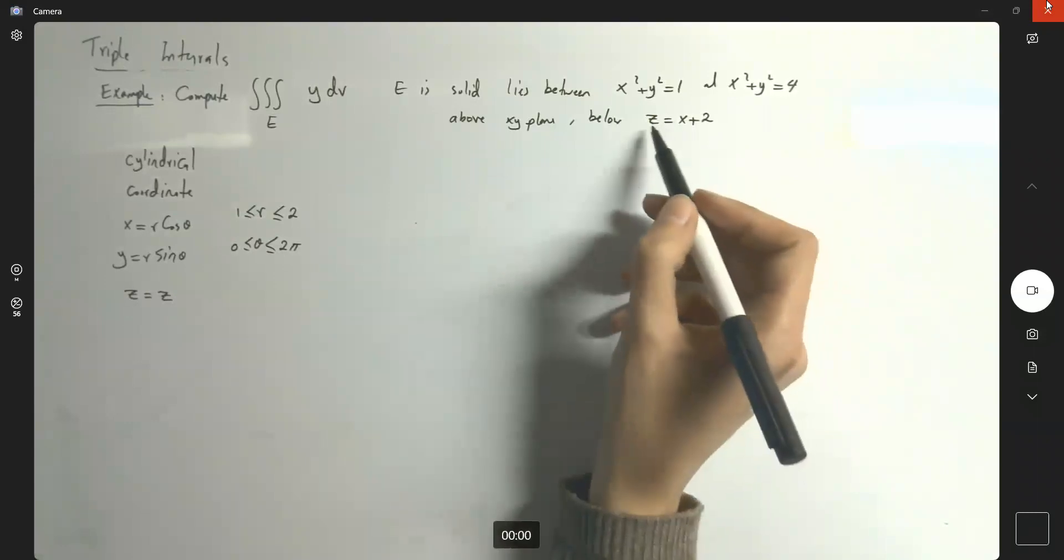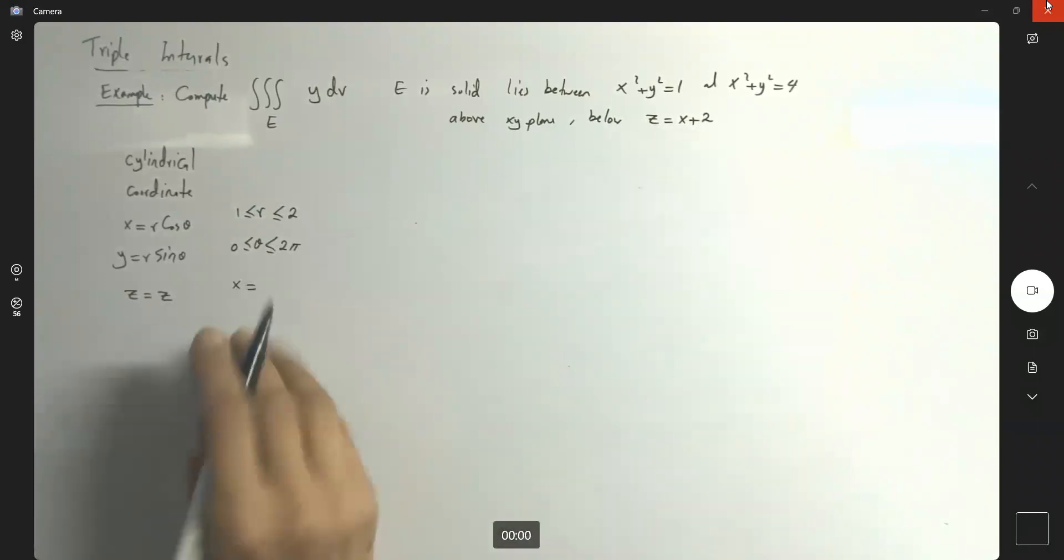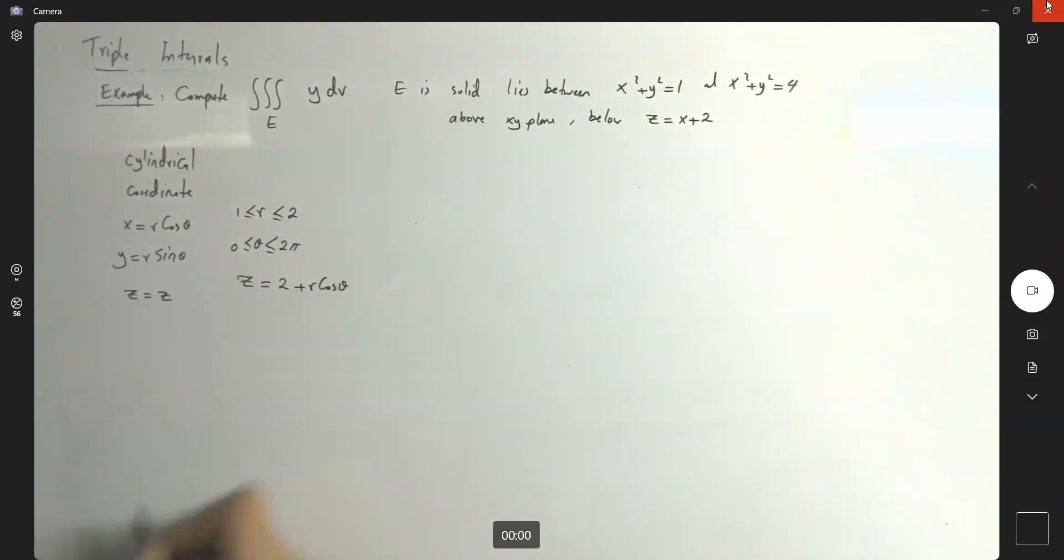So theta is bounded between 0 and 2 pi. Well, my z is equal to x plus 2. So what's the meaning of that? You know that x is r cosine theta. So my z becomes r cosine theta plus 2 or 2 plus r cosine theta.